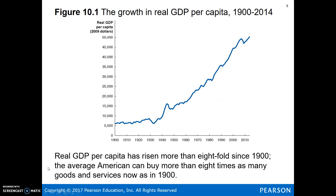The trend in real GDP over time shows a pretty significant increase. Looking at the United States from 1900 to 2010, it's risen more than eightfold. So Americans can now buy more than eight times as many goods and services as they could back in 1900 — and this is accounting for inflation, so it's a real eightfold increase.